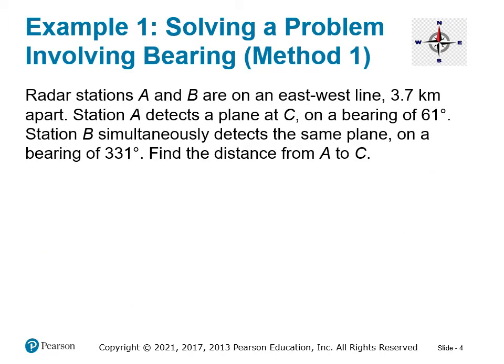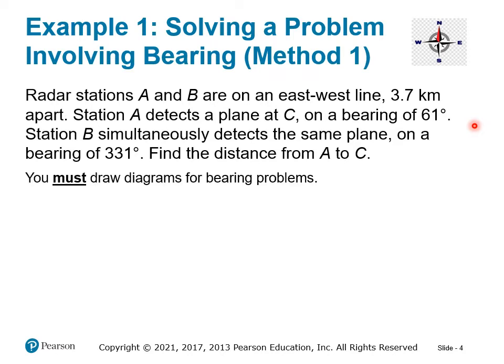Radar stations A and B are on an east-west line 3.7 kilometers apart. Station A detects a plane at point C on a bearing of 61 degrees. Station B simultaneously detects the same plane on a bearing of 331 degrees. Find the distance from A to C. It is very key when dealing with bearing problems that we draw diagrams.